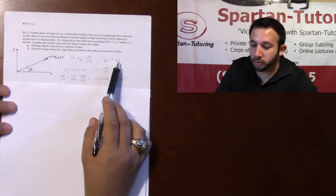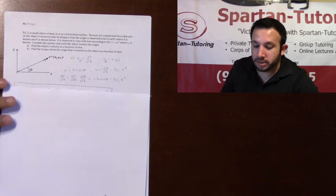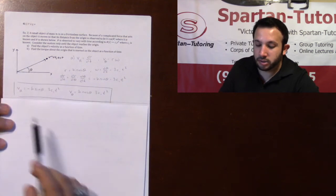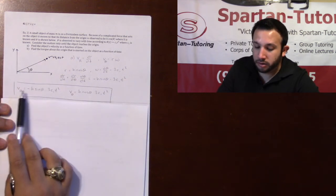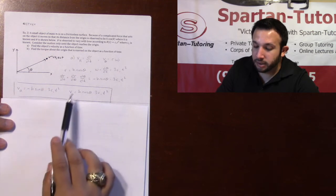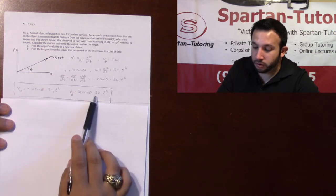Now that you have r, now that you have omega, and now that you have dr/dt, just plug and chug into your vr, which is your dr/dt, and your v theta, which is r omega.